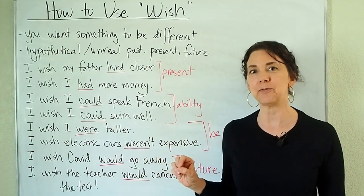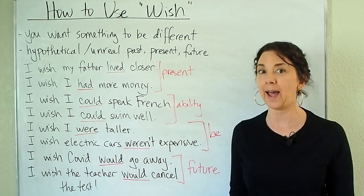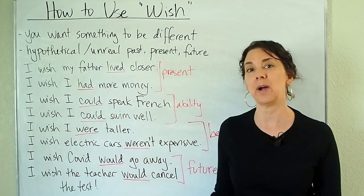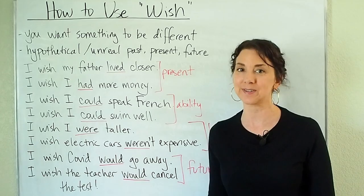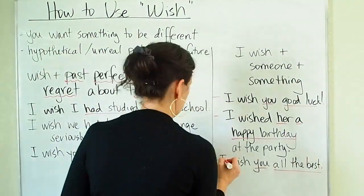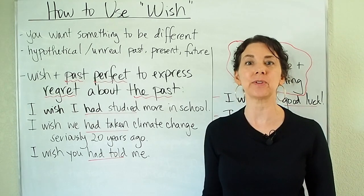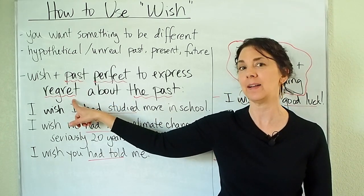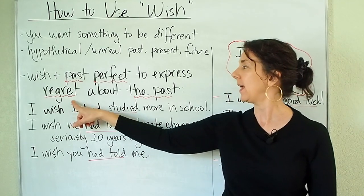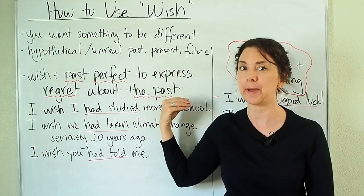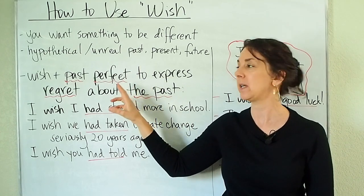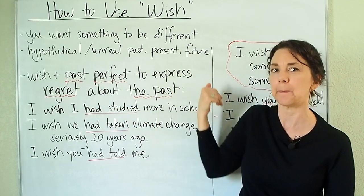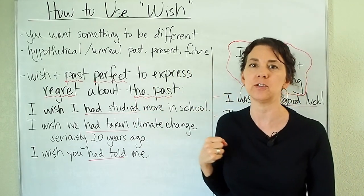We're going to look at how to use wish to talk about the past — something that you regret or something that you wish were different in the past. We usually think that this is expressing regret because we're thinking about a past situation that we wish were different. And again, this is something that cannot change because it happened in the past — it's finished. So to talk about the past, we're going to use past perfect in that second clause. Think about taking one step back: we're talking about the past, so take one step back and use the past perfect.